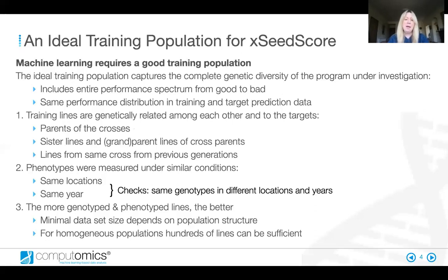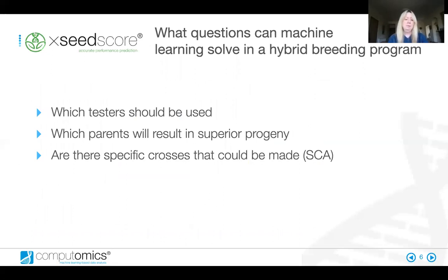I would like to give you some examples of how we support hybrid breeding programmes. These are the main questions that machine learning addresses in a hybrid breeding programme. The technology can support breeders in identifying the best testers. It can tell you which crosses will result in superior progeny, and it will give you a good understanding of general combining ability, as well as providing the ability to identify cases of specific combining ability.